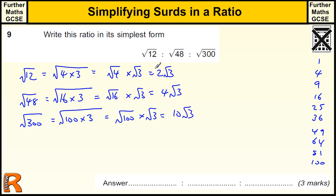So each of these can be written in these forms, so that's the same as 2:4:10, because we can just divide through by the square root of 3. And then we can see this can be cancelled down again. By halving each one, we get 1:2:5 for 3 marks.